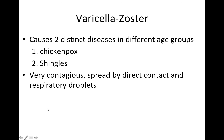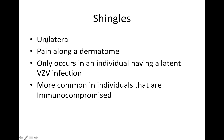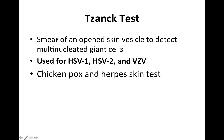Varicella zoster virus causes two distinct diseases depending on age group: chickenpox in the younger group and shingles in the older group. It's very contagious, spread by direct contact and respiratory droplets. Shingles is characterized by unilateral pain along a dermatome. It only occurs in individuals with a latent varicella zoster virus infection and is more common in immunocompromised individuals. The hallmark signs of shingles are unilateral presentation and pain along the dermatome.